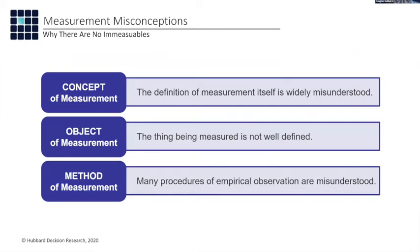I wrote my first book based on the idea that everything I ever ran into at various clients — I've been in quantitative management consulting for 32 years — I would periodically run into objections to measurement. I started categorizing them, and I decided before I wrote my first book around 2005-2006, that there were really only three reasons why anybody ever thought something was immeasurable, and they're all three illusions. I summarized these in the book, now in its third edition. I call them concept, object, and method — or C-O-M.